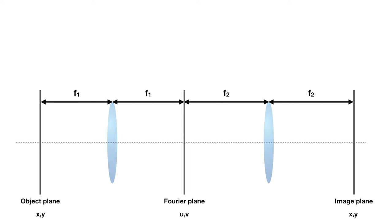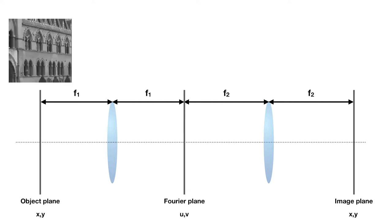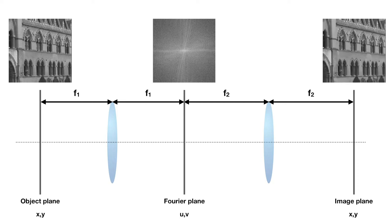In an imaging system, when an image is relayed from one focal plane to another focal plane, the result is not an image, but a Fourier transform of the image. Once that Fourier transformed image is relayed a second time, it provides the image back again.